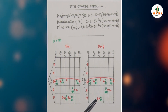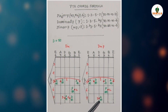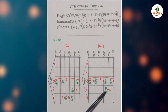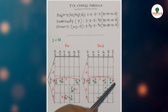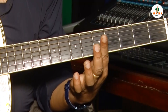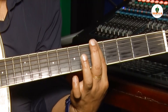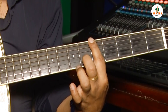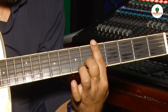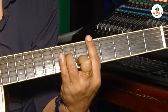1st string হচ্ছে A, শর হচ্ছে পা। 2nd string, 6th fret, 2nd finger — note হচ্ছে F, শর হচ্ছে কমোলনি। D minor 7th chord। 1st finger, 5th fret — এভাবে ধরতে হচ্ছে। 2nd string, 6th fret, 2nd finger — এভাবে বসতে হচ্ছে। 4th string, 7th fret, 3rd finger। D minor 7th, 5th fret।